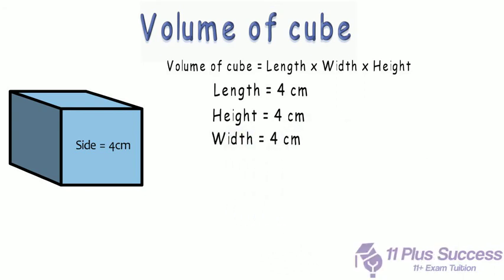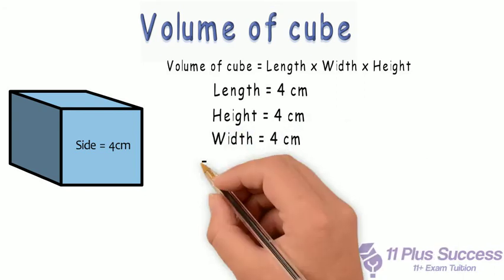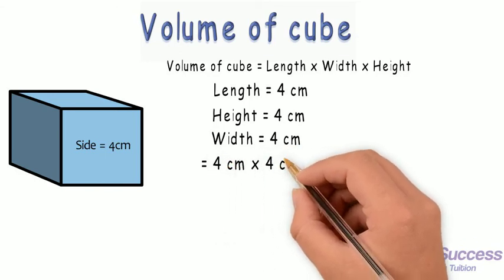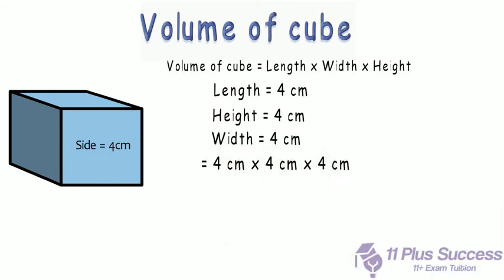Width equals 4cm. Volume of Cube: 4cm times 4cm times 4cm, or 4cm cubed. Volume of Cube equals 64cm³.